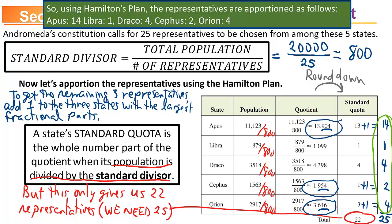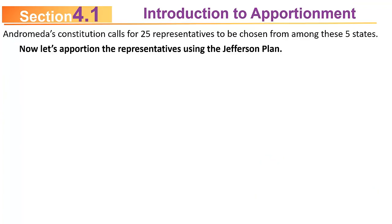So using Hamilton's plan, the representatives are: 14 for Apis, 1 for Libra, 4 for Draco, 2 for Cephas, and 4 for Orion. Now let's do it again using the Jefferson plan to see what Jefferson's plan actually does.